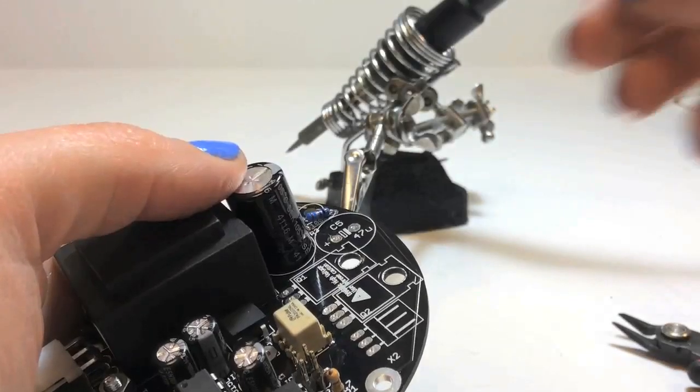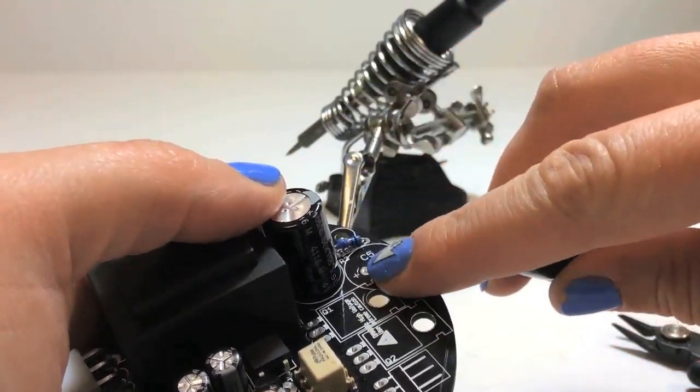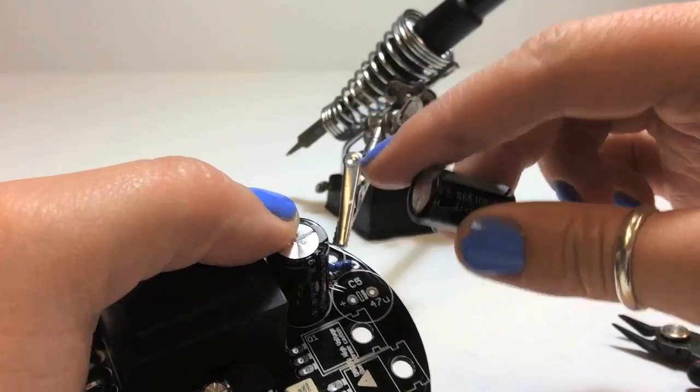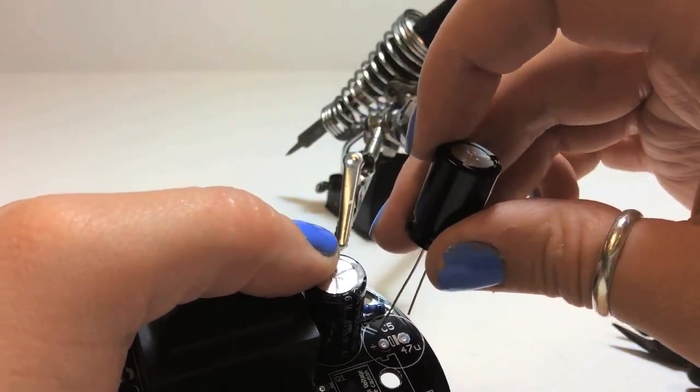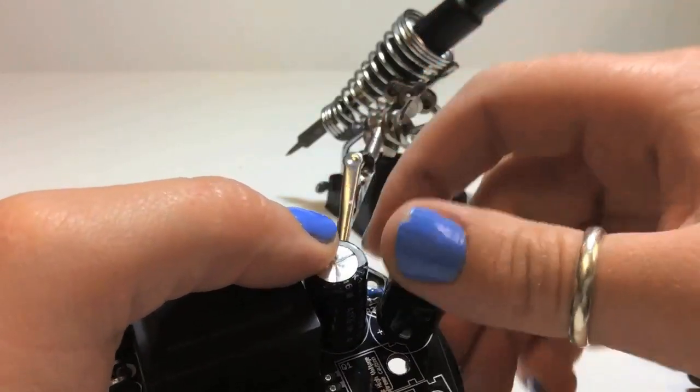Now to install the C4 and C5 bus capacitors. Note they are directional, the negative side is marked on the side of the capacitor and the positive is marked on the board.